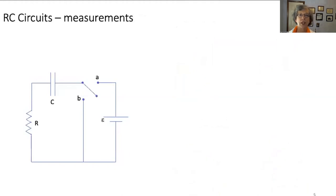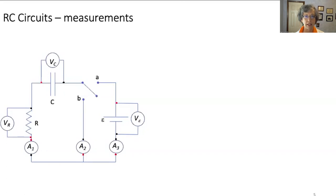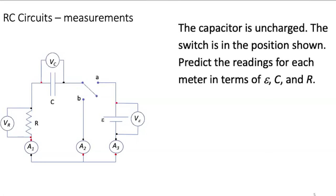Let's focus on this RC circuit now. I've added three voltmeters to the circuit across the battery, capacitor, and resistor, and I'm using colored dots to indicate the positions of the red and black leads. Now I've added three ammeters to the three vertical wires, using colored dots again to indicate the position of the red and black leads. The capacitor is uncharged and the switch is in the position shown. Predict the readings for each meter in terms of epsilon, C, and R. Pause the video while you write down your predictions.